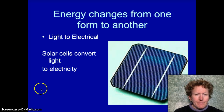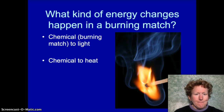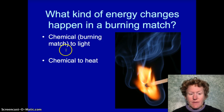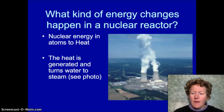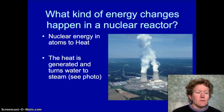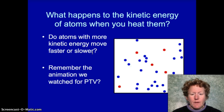Energy changes from one form to another. If you use solar cells, you convert light to electricity. Anytime you light a match, chemical energy from the wood and phosphorus on the tip turns into heat and light energy. In nuclear power plants, the energy inside the nucleus is turned into heat, and that heat is turned into electrical energy.